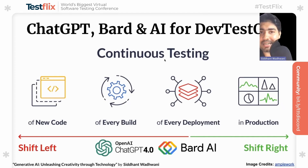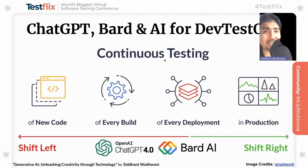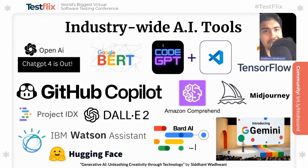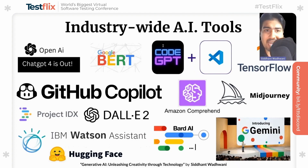AI can be used to generate test cases automatically based on user requirements, and it can also analyze test results and recommend optimizations, allowing testers to continuously improve the quality of their tests. Let's take a look at some industry-wide AI tools we can leverage: GPT-4, BERT, GitHub Copilot, CodeGPT as a VS Code extension, Watson Assistant, Amazon Comprehend, Microsoft LUIS, Hugging Face, Vid.ai, TensorFlow, MidJourney, DALL-E, and more.